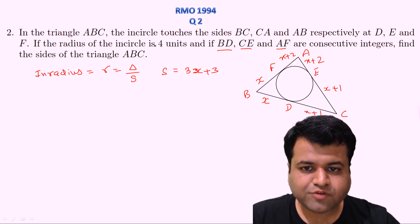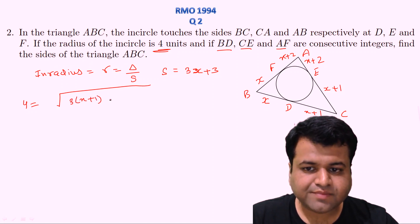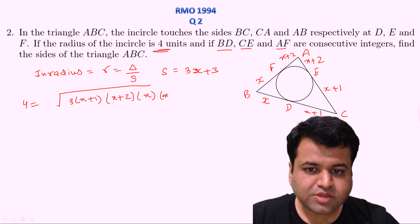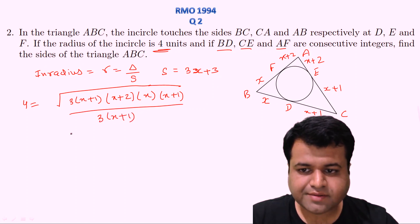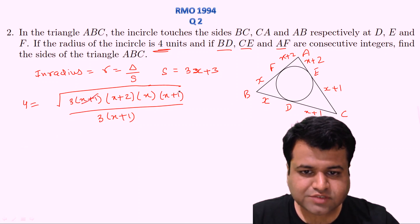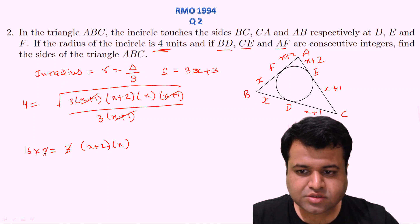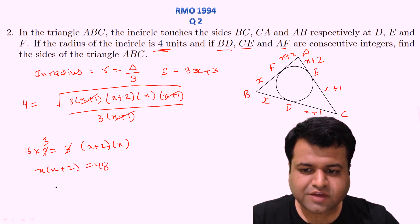The inradius formula is r = Δ/S, where Δ is the area and S is the semi-perimeter. Using Heron's formula, Δ = √[S(S−a)(S−b)(S−c)]. With S = 3(X+1), S−a = X+2, S−b = X, S−c = X+1. So: 4 = √[3(X+1) · (X+2) · X · (X+1)] / [3(X+1)]. Simplifying, (X+1)² cancels, and squaring both sides gives 16 × 9 = 3 · X(X+2), so X(X+2) = 48.